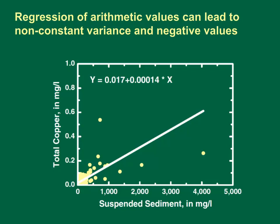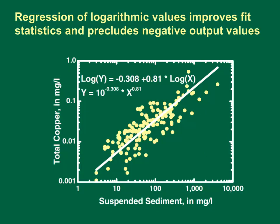Furthermore, use of the arithmetic regression line statistics would not be technically defensible because the variance of the scatter does change with increasing suspended sediment concentrations. This violates the assumption for the commonly used ordinary least squares linear regression technique and precludes meaningful use of the scatter for Monte Carlo analyses. This graph shows the linear relation between the logarithms of the data from the last slide. The measured values are shown on a logarithmic scale. We can see that variance in the scatter above and below the line is relatively constant. The logarithmic scales show that these data vary by orders of magnitude and that the relation in logarithmic space is linear.